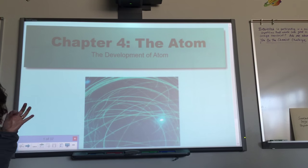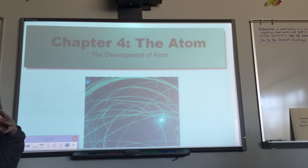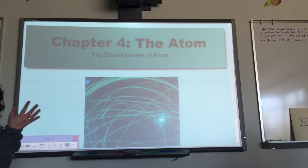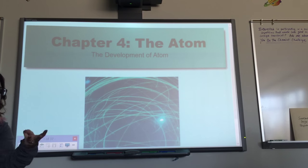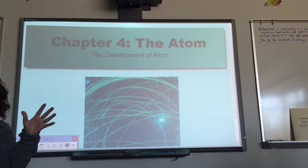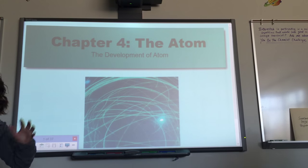So guys, this is when chemistry gets fun because now we're starting to talk about the atom. We're going to start talking about how atoms match up together, and we're going to start reading the periodic table. In order to understand that the atom is composed of protons, neutrons, and electrons — where electrons go around the nucleus — you have to understand the history behind it, like where did it come from?